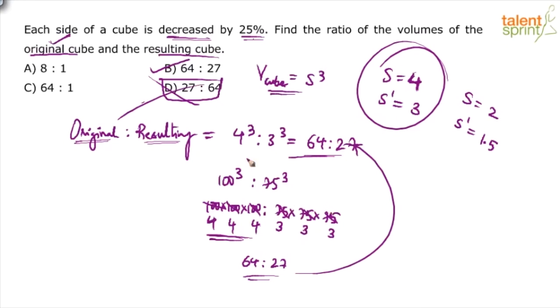But this is lengthy in my view because a lot of calculations is involved. So keep it simple: 4 becomes 3, so 4³ is to 3³.